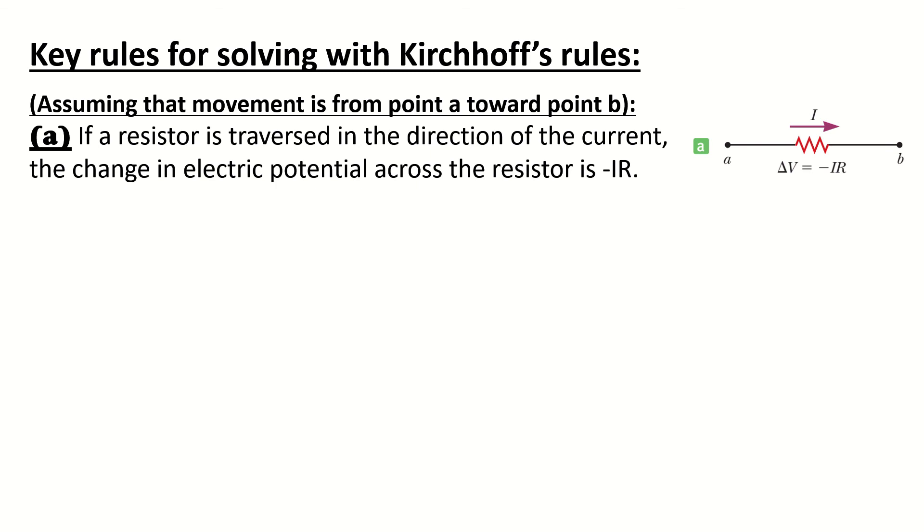The first one, if a resistor is traversed in the direction of the current, the change in electric potential across the resistor is negative IR. So, if you're traveling from A to B and the current is in the same direction, so this voltage will be a drop equals IR.